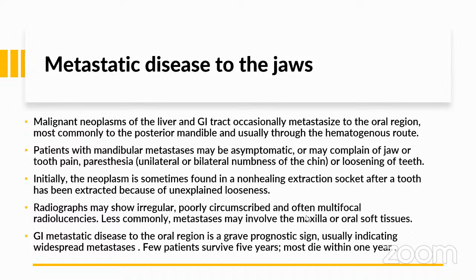Metastatic disease of the jaws: malignant neoplasms of the liver and GI tract occasionally metastasize to the oral region, most commonly to the posterior mandible via the hematogenous route. Patients may be asymptomatic or complain of jaw or tooth pain, paresthesia, unilateral or bilateral numbness of the chin, or loosening of the teeth. The neoplasm is sometimes found in an unhealing extraction socket. Radiographs may show irregular, poorly circumscribed, multifocal radiolucencies. GI metastatic disease to the oral region is a grave prognostic sign — most patients die within one year.